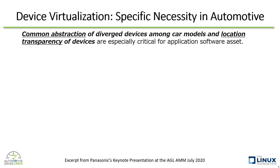The first necessity is simple. Depending on car grade or car model, equipped devices may vary. For example, even for the same car OEM, there are a variety of displays for different car grades or car models — the number, size, or aspect ratio of displays can be different. Thus, we need common abstraction for such diverged devices to preserve software assets.